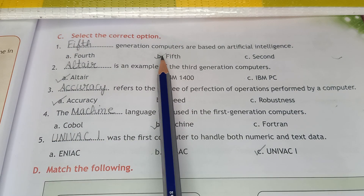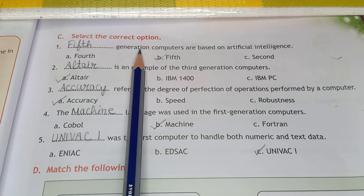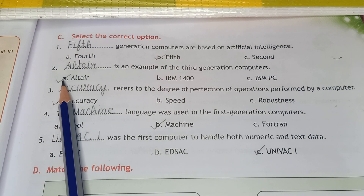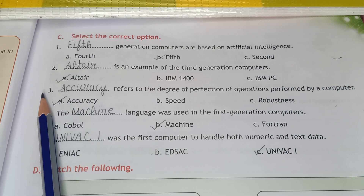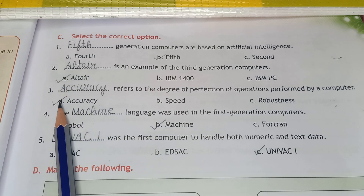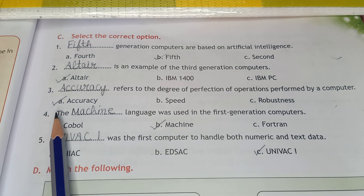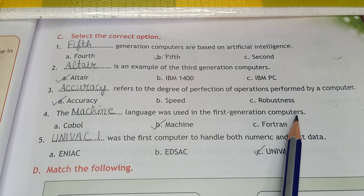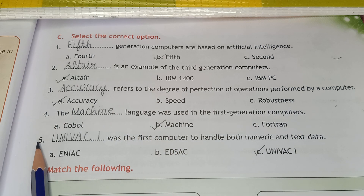For the multiple choice section: First, click on B — 5th generation computers. Second, click on A, this is the right answer. Third, click on A. Fourth, the machine language was used in the 1st generation computers — click on B. Fifth, click on C.